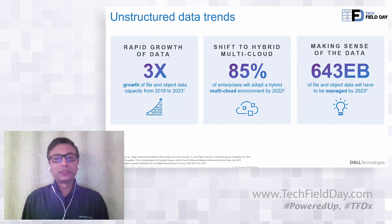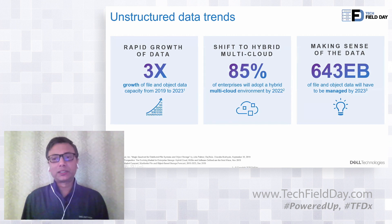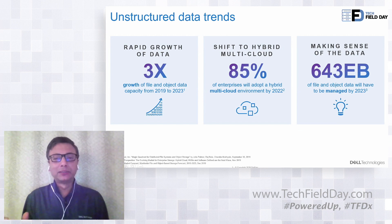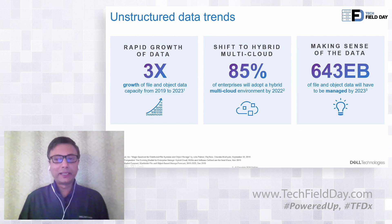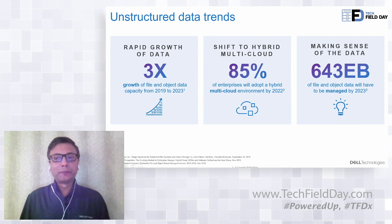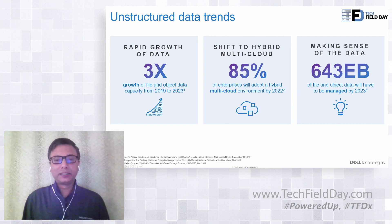85% of enterprise customers are now moving to a hybrid multi-cloud environment. This is especially important in the unstructured space because unstructured workloads — like video editing or genomics — typically have a burst angle to them. When a movie production is going on, you might need to spin up hundreds of compute instances for video editing, but once the editing is done, you don't need it until the next project. So there's a lot of need for compute for a shorter duration, which is ideal for a cloud environment, using cloud for compute and then bringing back data on-prem.